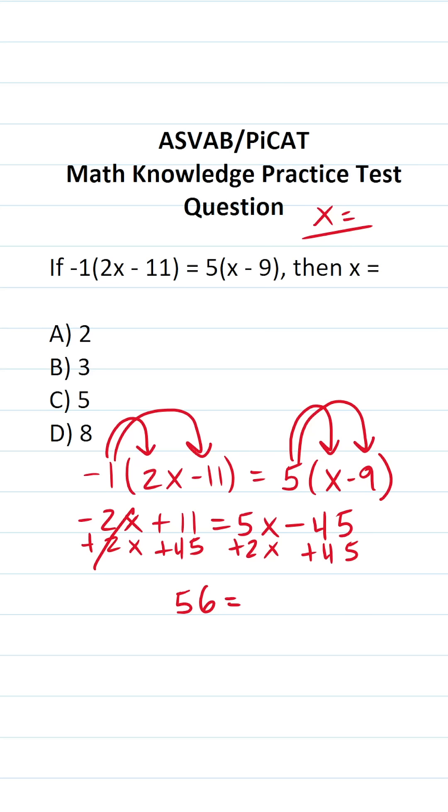What's 5x plus 2x? So that's going to be 7x. Negative 45 plus 45, that crosses out. So we're left with 56 equals 7x. To get x by itself, we're going to divide both sides of the equation by 7. This says x equals 56 divided by 7, which is 8. So x in this case is 8.